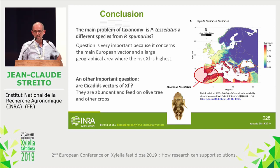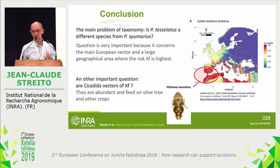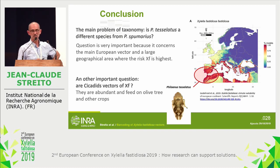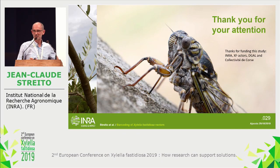Another important point: are Cicadidae vectors of Xylella or not? This matters because there are many species, they are really abundant, and they feed on many crops and trees — especially olive trees, but also almond trees and vineyards. If they are good vectors, we will probably have a lot of problems. Thank you for your attention.